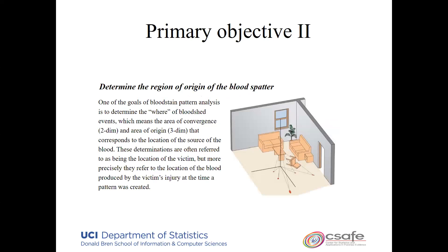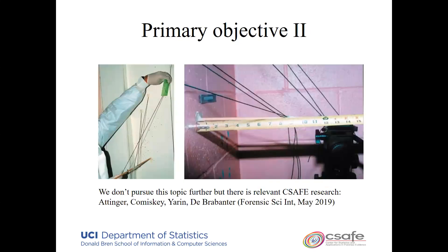The second objective — I only have two slides on this because it's not our focus. The idea, shown in a picture from the TV show Dexter, is to track back from the bloodstains to the originating location, either in two dimensions — where in the room the person was standing — or in three dimensions taking height into account. The existing method most often used is tracing strings: for each stain, identify the orientation as a clue to whence it came, then trace the strings back to find a common location. The Iowa State Group has a nice paper on this topic addressing uncertainty and physical factors.